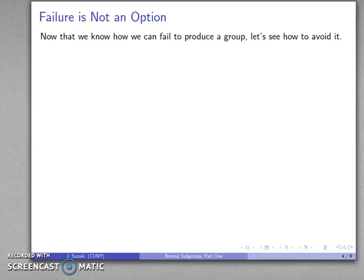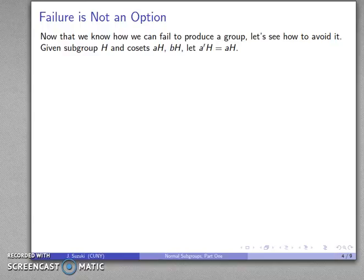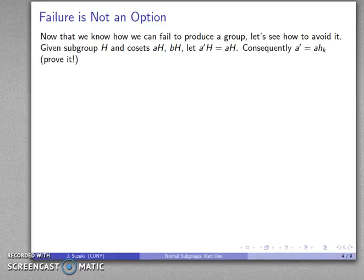Now that we know how we can fail to produce a group, let's see how we can avoid it. I have some subgroup H and cosets aH, bH, and I'm going to let a'H and aH be the same coset. I know that a' has to be in aH, so a' = ahk for some k. That's one of our coset lemmas, and if you don't remember that, you should prove it.